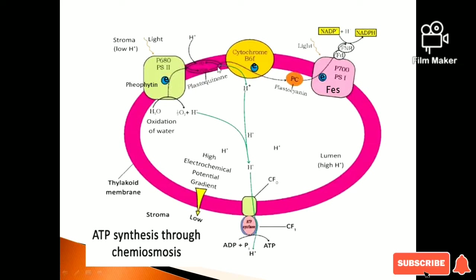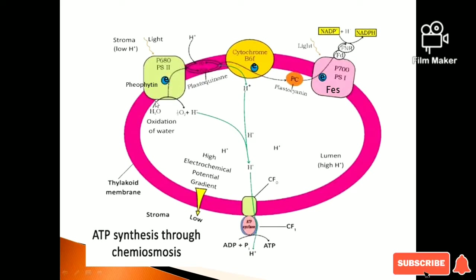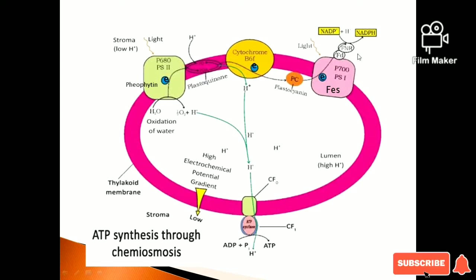There are two mobile carriers: Plastoquinone and Plastocyanin. Regarding positions: the water-splitting complex and PS2 face the lumen side, while PS1 and Ferredoxin face the stroma side. So PS2 is on the lumen side and PS1 is on the stroma side — they are at different positions.